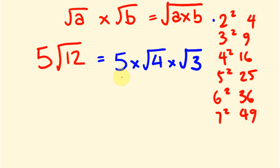If we continue, this equals 5 times the square root of 4, which is 2, times the square root of 3. We can take it a bit further: 5 times 2 is 10, and we're multiplying this by the square root of 3. So there's our answer.